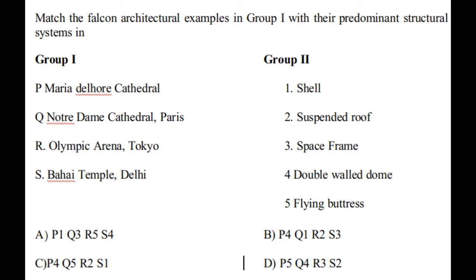Next question: match the architectural examples in Group 1 with their predominant structural systems in Group 2. Group 1: Maria del Fiore Cathedral; Notre Dame Cathedral, Paris; Olympic Arena, Tokyo; Bahá'í Temple, Delhi. Group 2: shell structure, suspended roof, space frame, double walled dome, flying buttress. The correct option is C — P4, Maria del Fiore Cathedral is a double walled dome. Q5, Notre Dame Cathedral, Paris, has a flying buttress. R2, Olympic Arena, Tokyo, has a suspended roof. And the Bahá'í Temple, Delhi, is a shell structure.